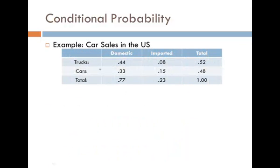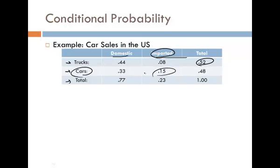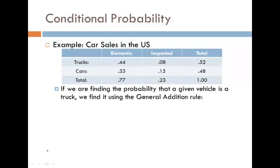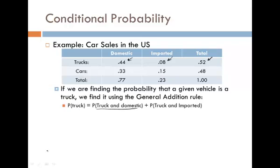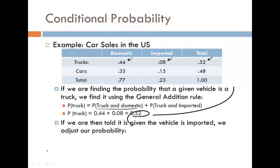Now we're going to apply this formula to a car sales example. We have domestic cars, imported cars, and totals. 15% of the vehicles were imported, 52% were trucks, and 77% were domestic. If we're finding the probability that a given vehicle is a truck, using the general addition rule: the probability of a domestic truck plus the probability of an imported truck — 44 plus 8 — gives us 52%.